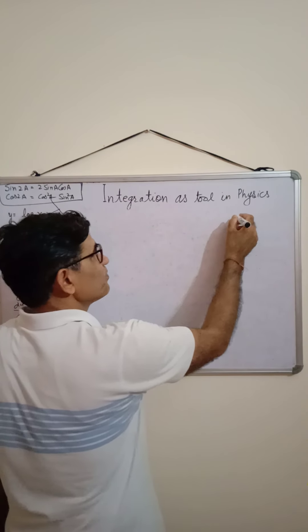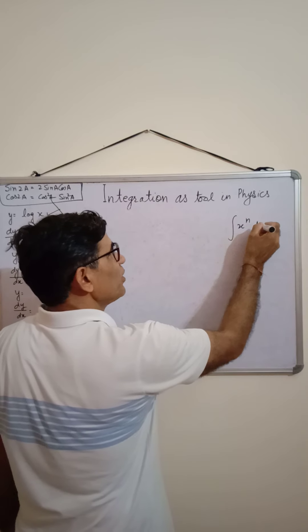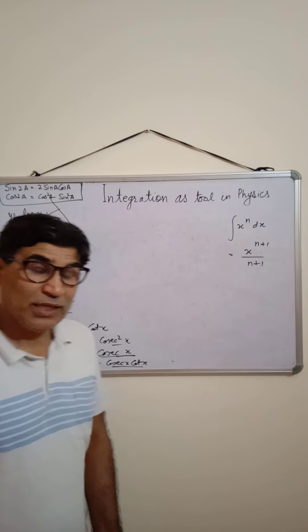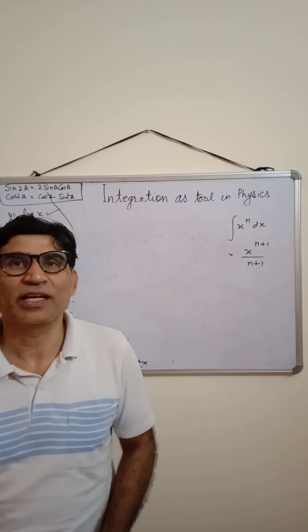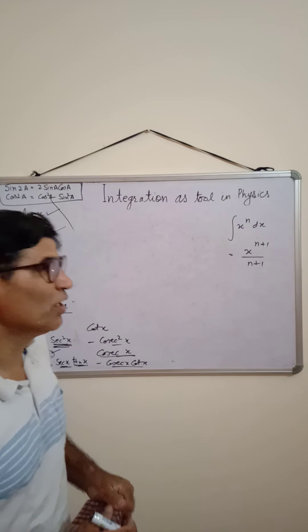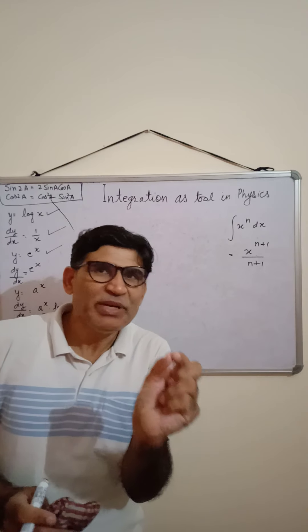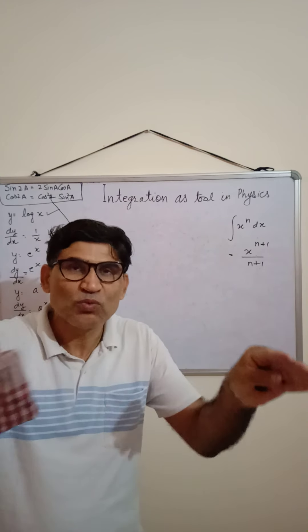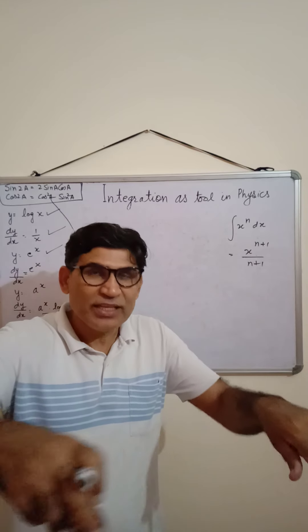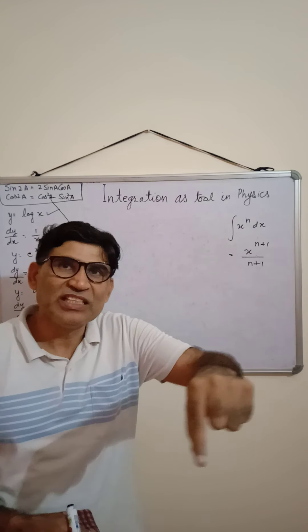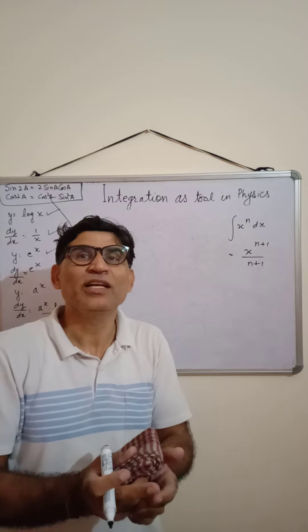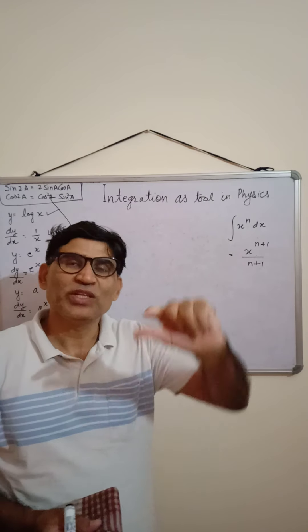So the formula is: ∫x^n dx = x^(n+1)/(n+1) + C. The physical significance of integration is that it means summing up — we add up many small bits piece by piece to get a total. For example, if we know the area of a very thin strip of a circle, we can integrate it to get the total area of the circle. Similarly, if we know the area of a ring, integrating it gives the total surface area of a sphere.